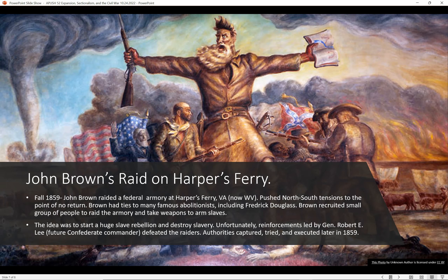John Brown's Raid on Harper's Ferry: in the fall of 1859, John Brown raided a federal armory at Harper's Ferry, Virginia — now West Virginia. It pushed North-South tensions to the breaking point. Brown had many ties to famous abolitionists, including Frederick Douglass. Brown recruited a small group to raid the armory and take weapons to arm the slaves, intending to start a huge slave rebellion and destroy slavery. Unfortunately, reinforcements led by General Robert E. Lee — who would later command the Confederate Army — defeated the raiders. Authorities captured, tried, and executed John Brown later in 1859.